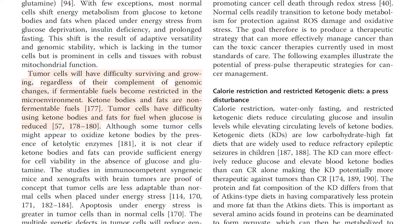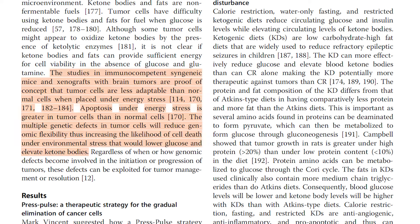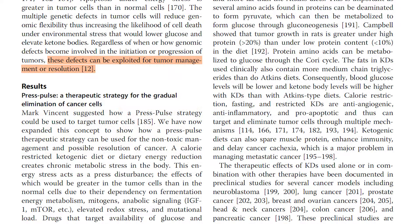Because energy generated through substrate-level phosphorylation is greater in tumor cells than in normal cells, tumor cells are more dependent than normal cells on the availability of fermentable fuels — glucose and glutamine. Most normal cells shift energy metabolism from glucose to ketone bodies and fats when placed under energy stress from glucose deficiency and prolonged fasting. Tumor cells will have difficulty surviving and growing, regardless of their complement of genomic changes, if fermentable fuels become restricted in the microenvironment. The multiple genetic defects in tumor cells will reduce genomic flexibility, thus increasing the likelihood of cell death under environmental stress that would lower glucose and elevate ketone bodies.